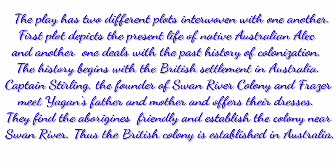Play Kullark has two different plots interwoven with one another. The first plot depicts the present life of the native Australian Alec, and the other deals with the past history of colonization. The history begins with British settlement in Australia. Captain Sterling, the founder of Swan River Colony, and Fraser meet Yagen's father and mother and offer their clothes. They find the aborigines friendly and establish the colony near Swan River. Thus, the British colony is established in Australia.